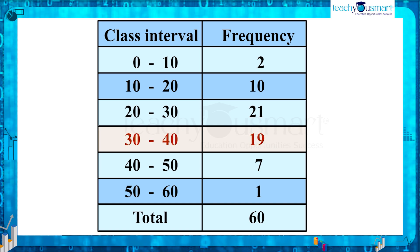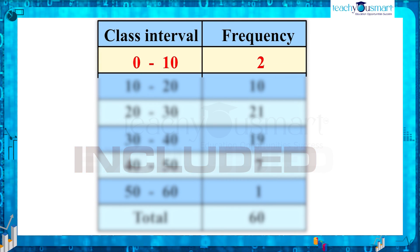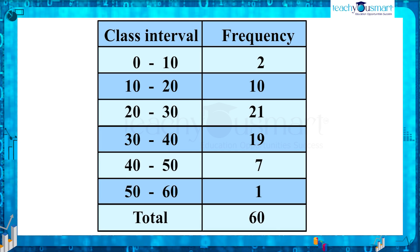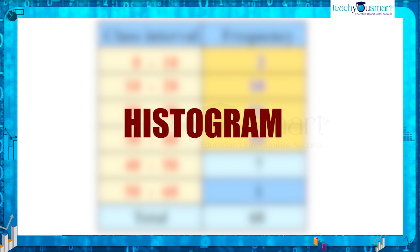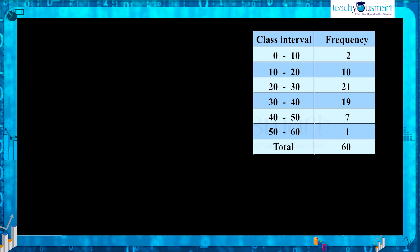In a class interval, the lower number is included while the upper number is excluded. Let's convert this data into a graph. The table shows a set of numerical data and we need to make a visualization of it. This visualization is called a histogram. Now let's see the visualization of the given data.